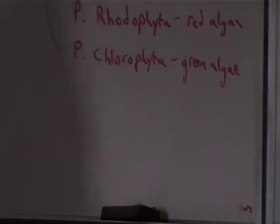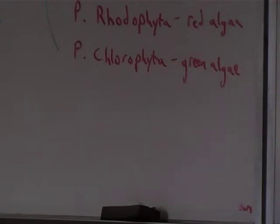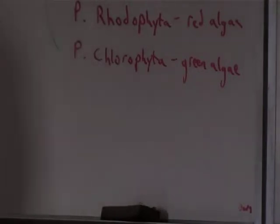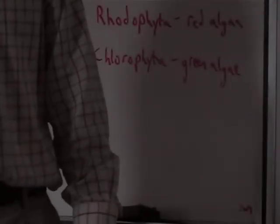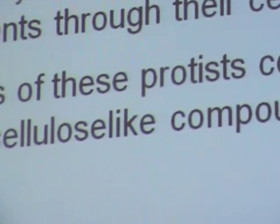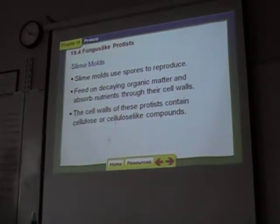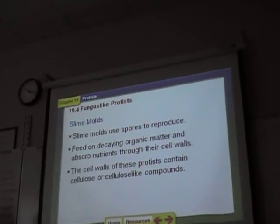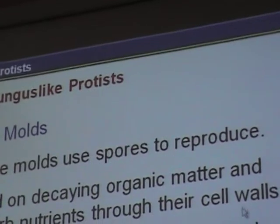Now let's do the fungus-like protists. This is on page 561. The fungus-like protists are called slime molds, water molds, and mildew. Slime molds use spores to reproduce. They feed on decaying organic matter — dead stuff — and absorb nutrients through their cell walls.